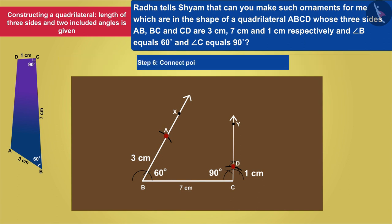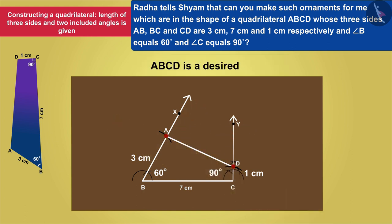By joining the points A and D, he gets a desired quadrilateral ABCD.